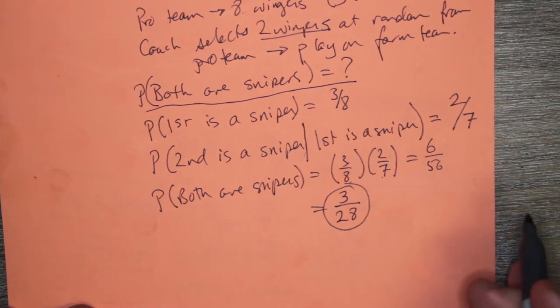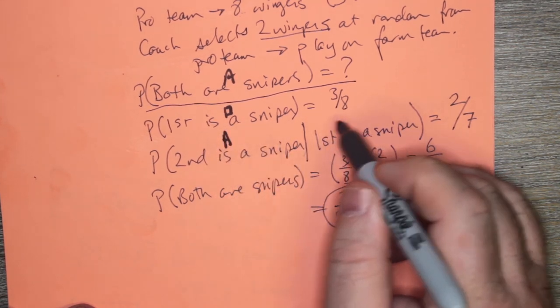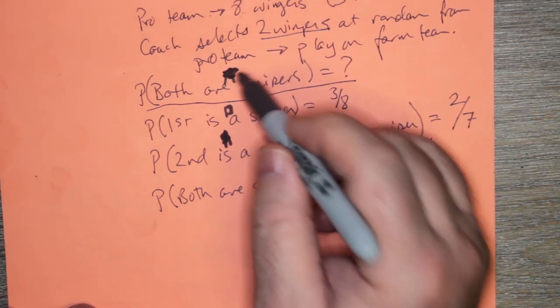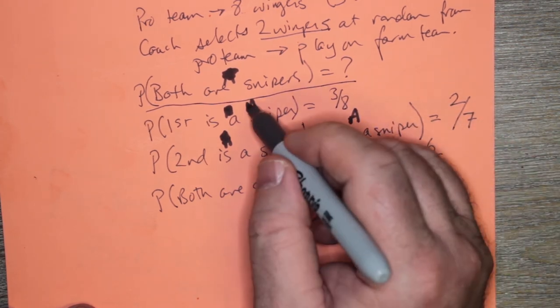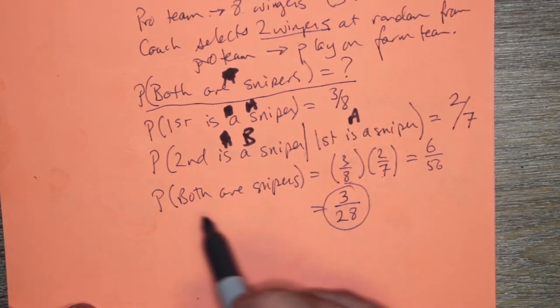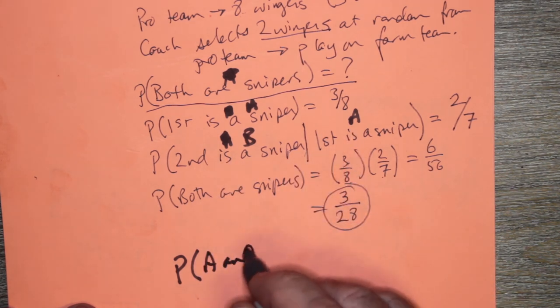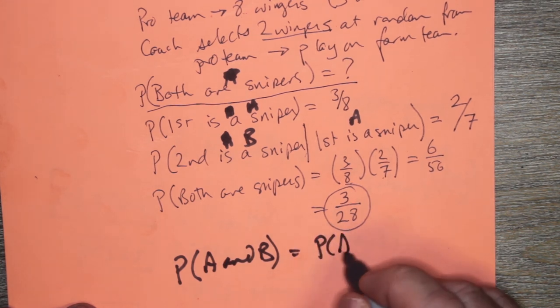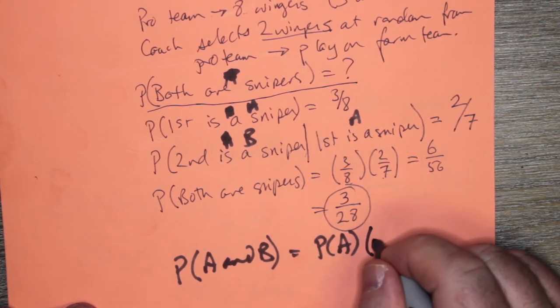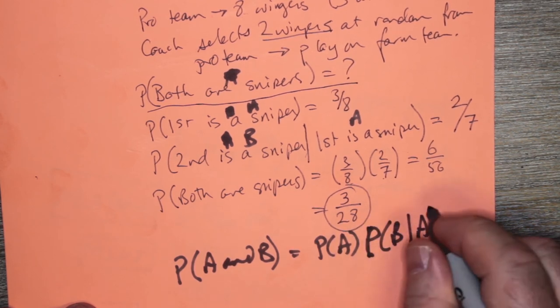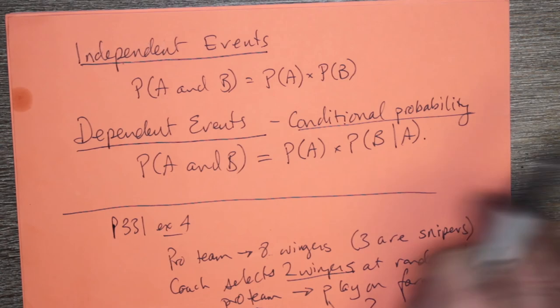And if you look at what I just did with the probability, if we call this event A and this event B, then this is both are snipers. If this is event A, and this is still event A, because they both have to do with the first being a sniper, this must be event B. Then the probability that both are snipers, that A and B occur, is the probability of A, because that was three over eight, times the probability of B given A, which was two over seven. So that verifies our formula that we started off with about dependent events. Thank you.